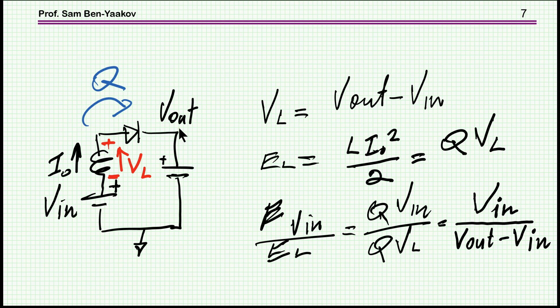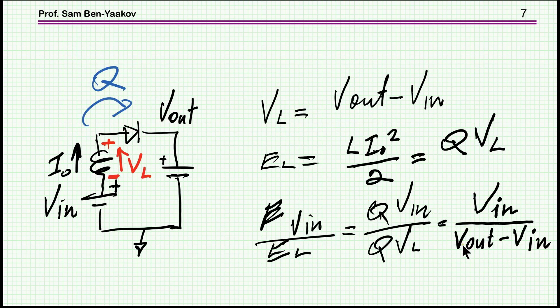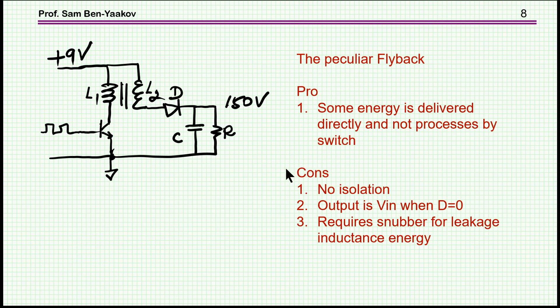So if V_out is large, this amount of energy is small. In fact, as this question was posed or as the circuit was presented, it was said that the input is 9 volt and this is 150 volt. So the difference is large and therefore most of the energy is actually becoming out of the inductor rather than from the input. So this is the only thing I can say in a positive way for this circuit.